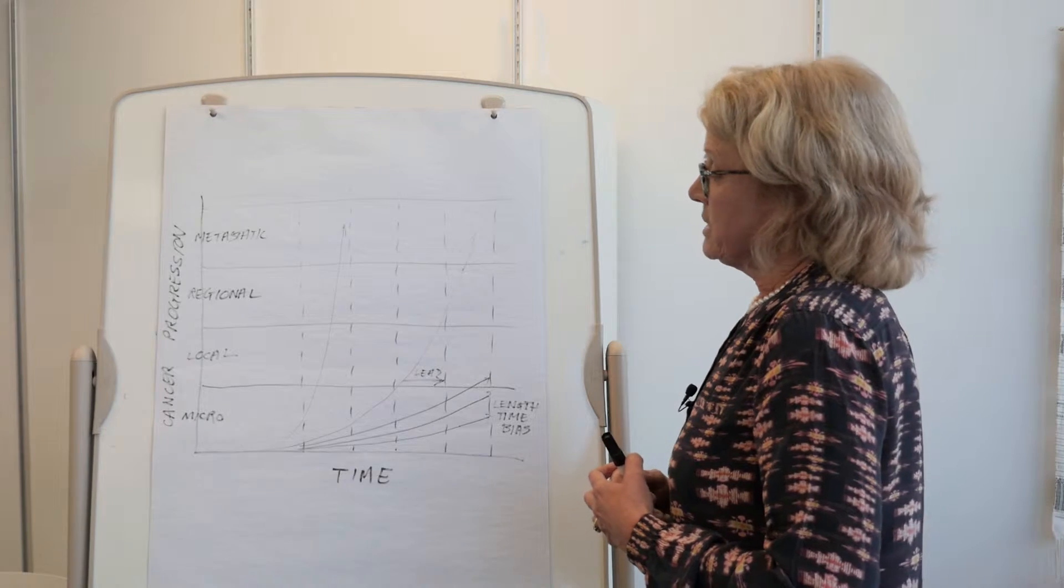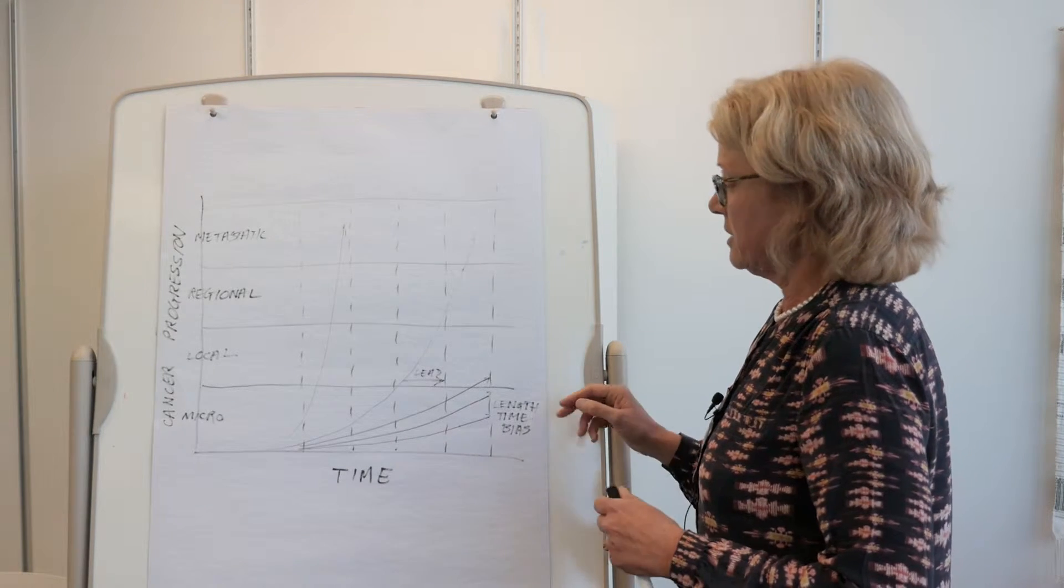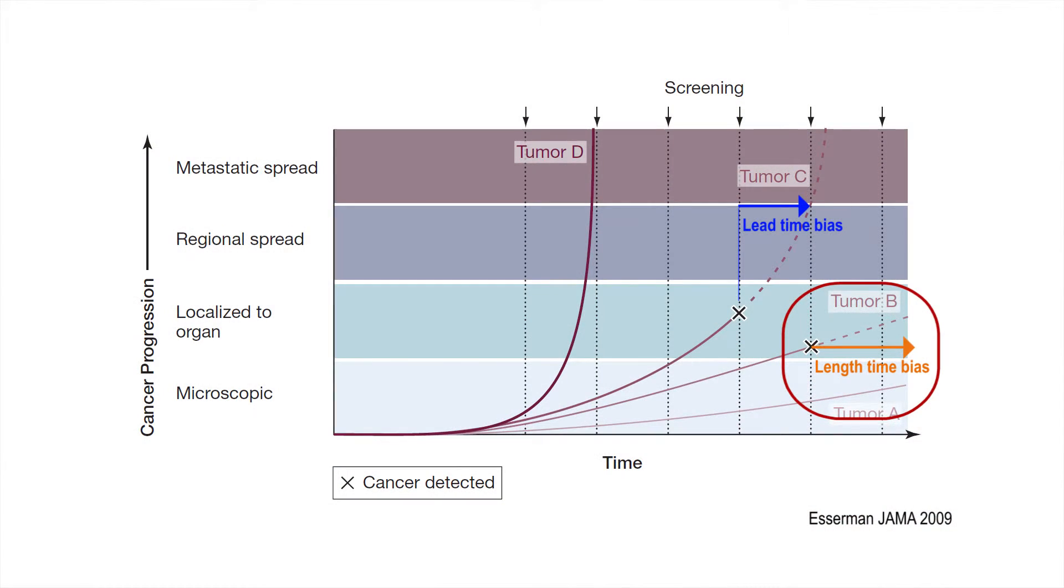A concept that students really need to understand and which is quite difficult to grasp is an issue called length time bias. What that means is that screening actually detects a different spectrum of cancer than the one that would present clinically.